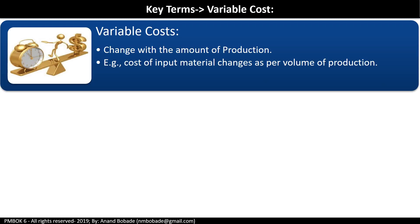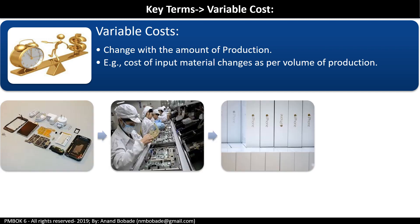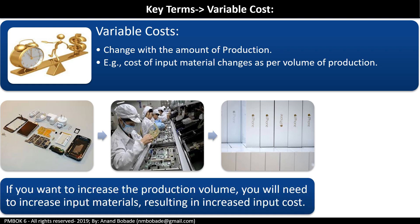Variable cost changes with the amount of production. For example, the cost of input material changes with the volume of production. If you are manufacturing 1,000 phones per day, the input cost might be $200,000. If daily production increases to 2,000 phones, the input cost increases to $400,000. The conclusion is: if you want to increase production volume, you need to increase input materials, resulting in increased input cost.